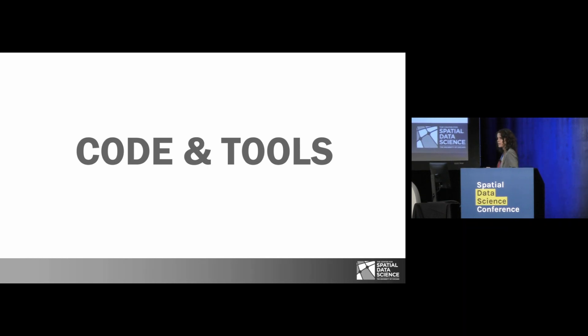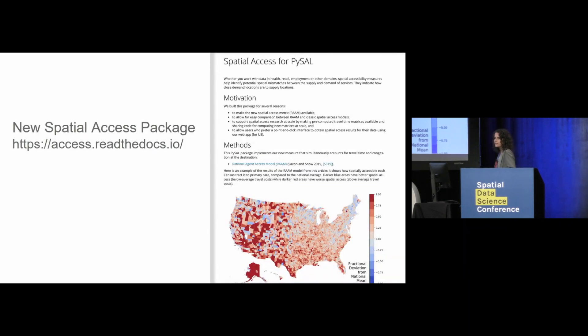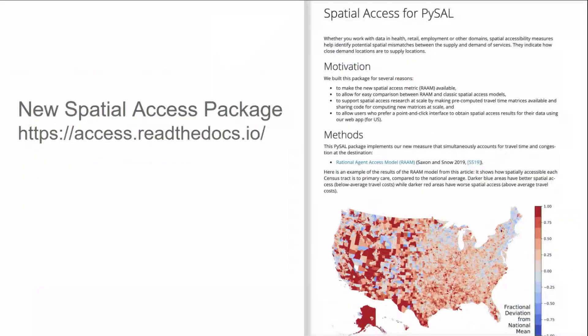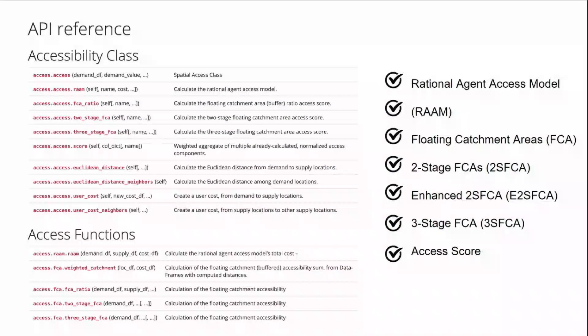Now let me give you an overview of the code, data, and tools to calculate the spatial access metrics. You can find the spatial access package at access.readthedocs.io — it's part of the PySAL library, BSD licensed, which means you can use it for commercial purposes. There's an API that we're still documenting. The models included are RAM, the classic floating catchment area models, and an access score.